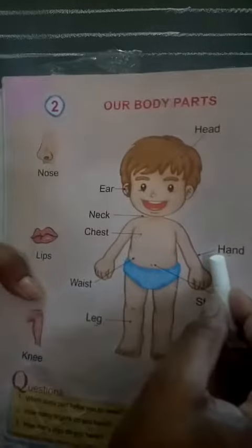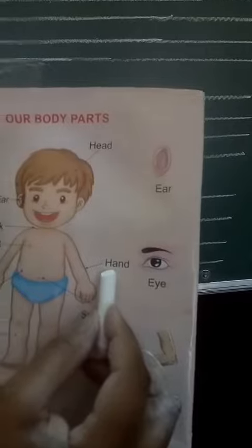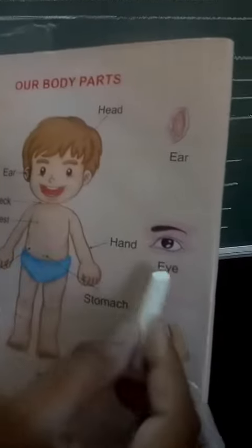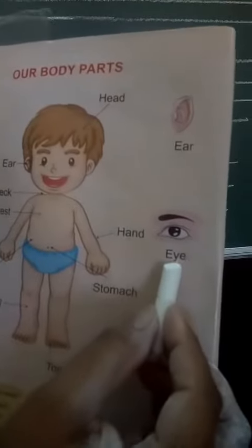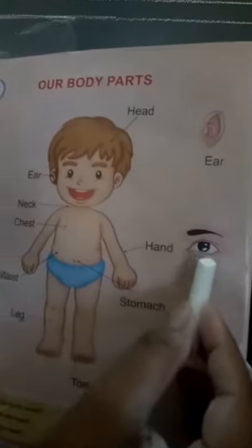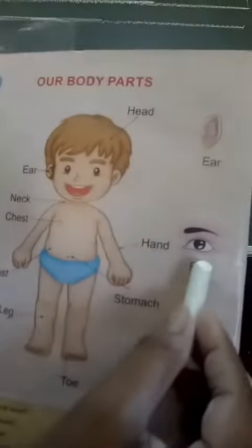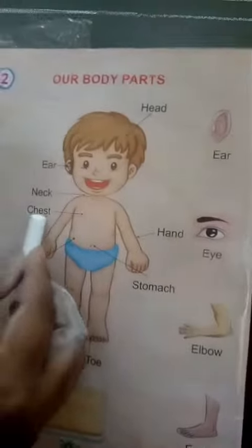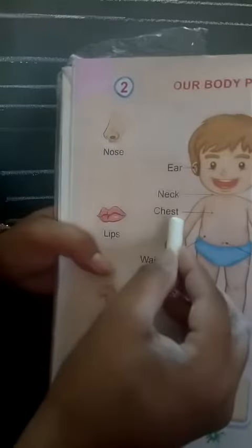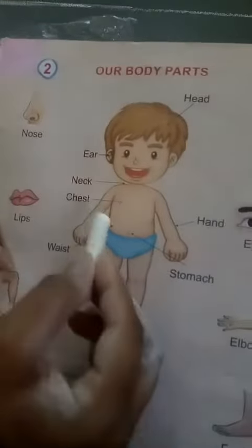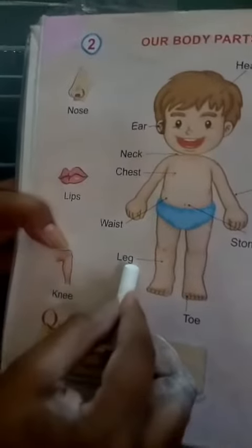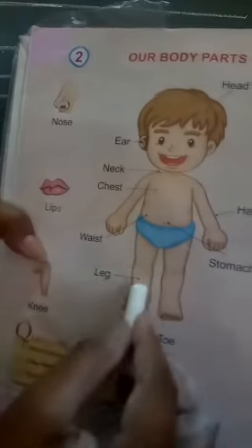Hand. H-A-N-D. Hand. Eye. E-Y-E. I means aank. C-H-E-S-T. Chest. Chest means chati. L-E-G. Leg. Leg means pair.